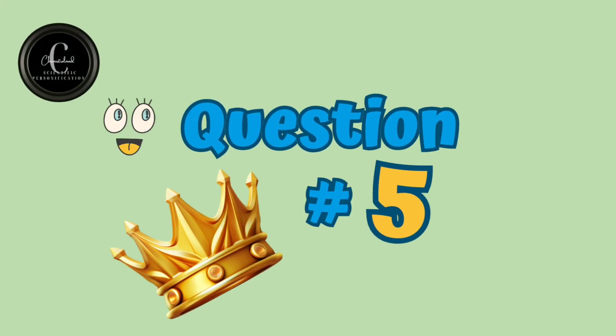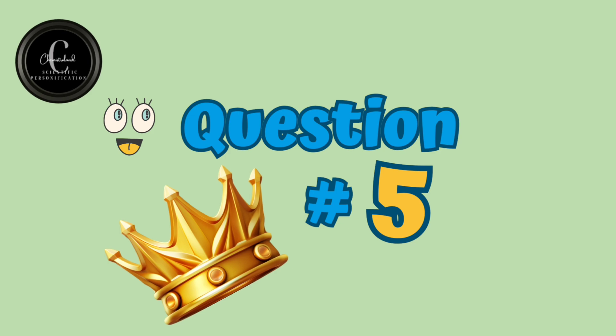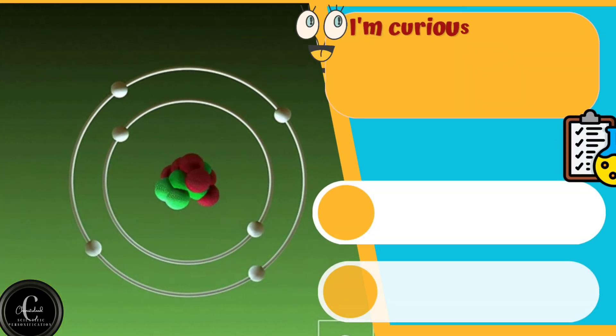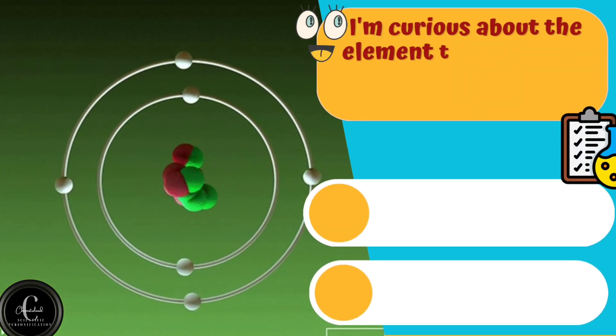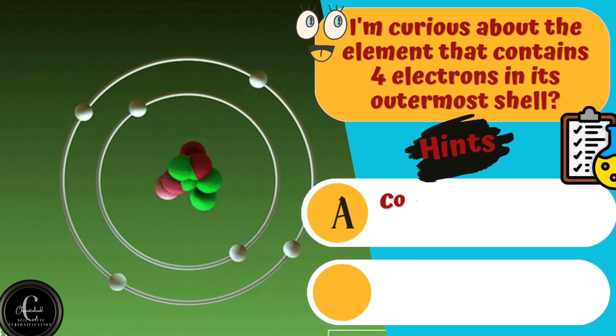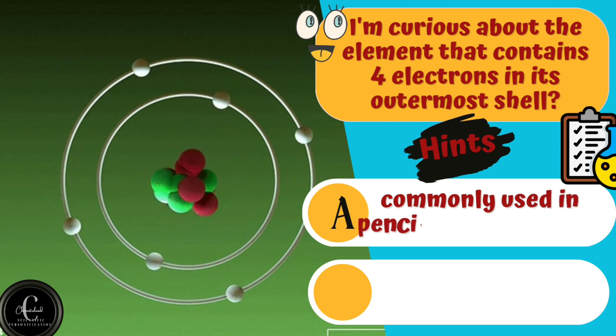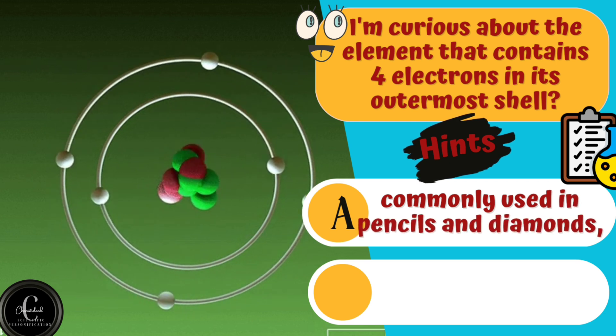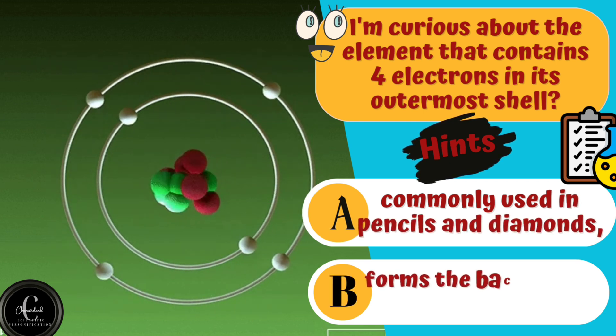Here is king question of the quiz, required answer like king. I'm curious about the element that contains four electrons in its outermost shell. Hints are A. Commonly used in pencils and diamonds. B. Forms the backbone of organic molecules.